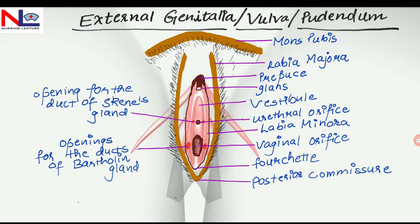In this lecture, I will talk about the female external genital regions. These are commonly known as vulva or pudendum. It consists of all externally visible parts in the female reproductive system: Mons pubis, labia majora, labia minora, clitoris, and the vestibule containing the openings of various ducts.